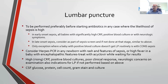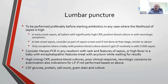In terms of lumbar puncture, it needs to be performed preferably before starting antibiotics in any case where the likelihood of sepsis is high. If the baby is clinically stable enough to tolerate it, you do the lumbar puncture before antibiotics are started. In early onset sepsis, the likelihood of meningitis is lower. Most of us do it if there is strong correlation like maternal chorioamnionitis, the baby has fever, or if the culture comes positive. If there is meconium aspiration pneumonia and CRP is going high, you don't necessarily need to do a lumbar puncture immediately, as inflammation from meconium itself causes the CRP to rise. Individualize your decision and document your plan clearly.